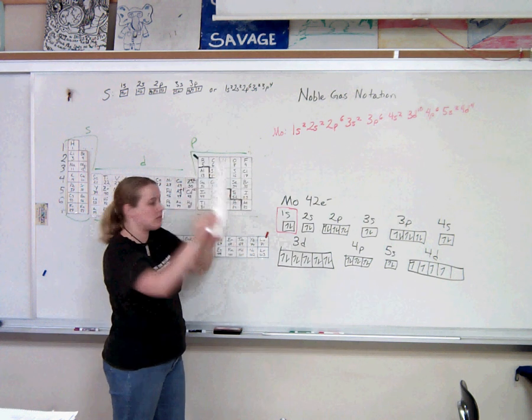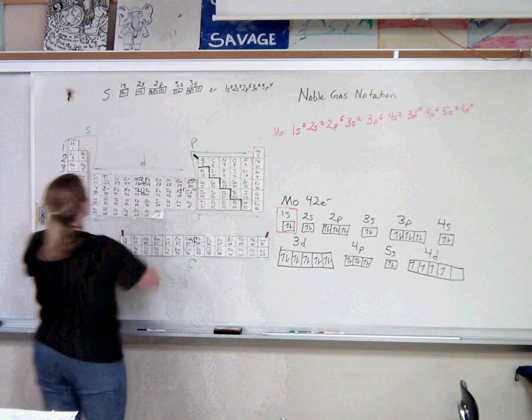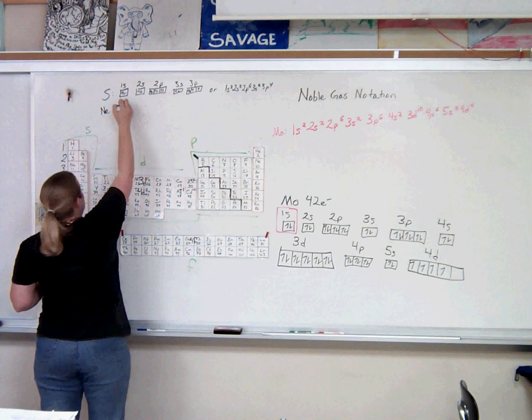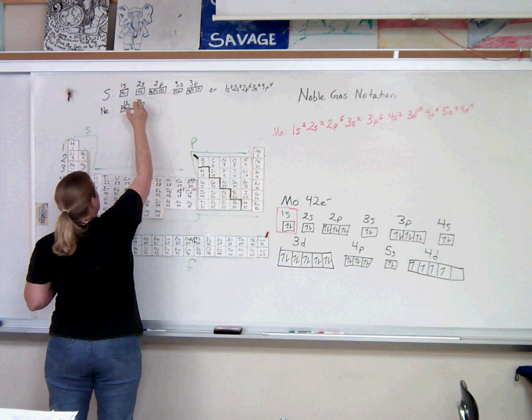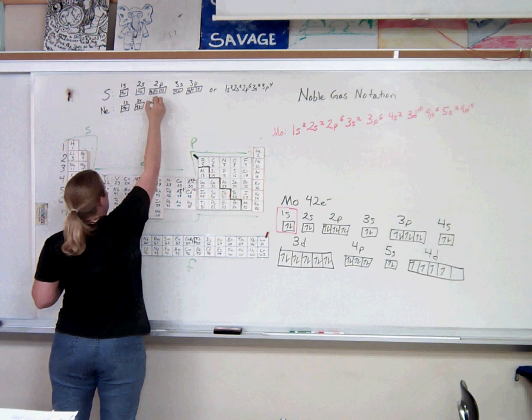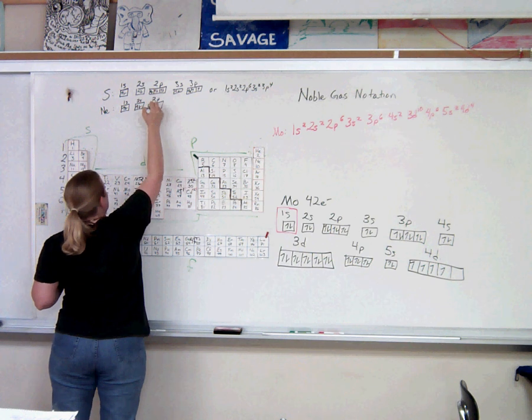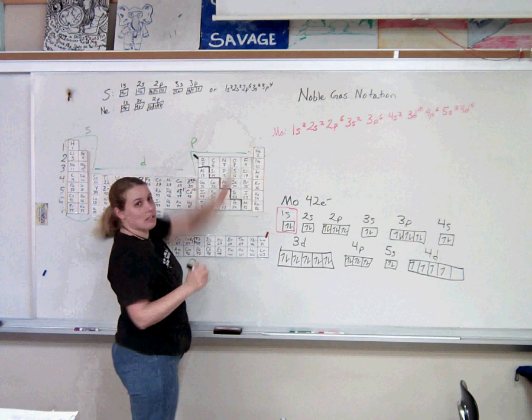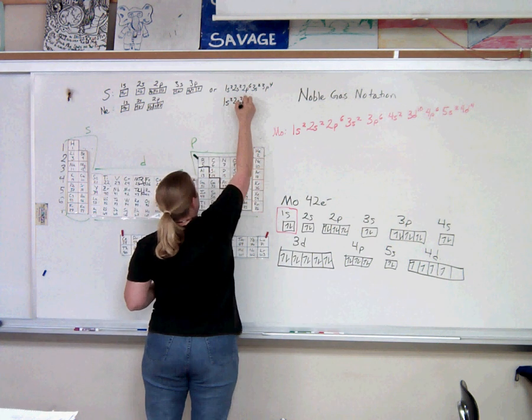Neon has ten electrons. Let's draw out neon. Neon starts 1s, because they always start 1s, then 2s with two electrons, and then it has six electrons in 2p. Or we can talk about its electron configuration: Neon is 1s2, 2s2, 2p6.